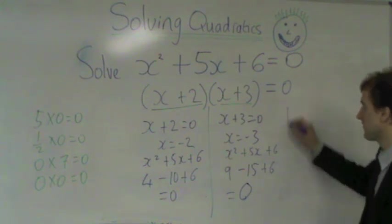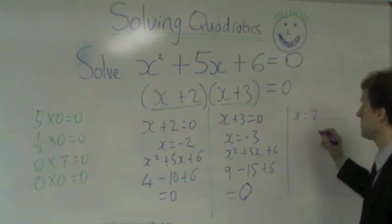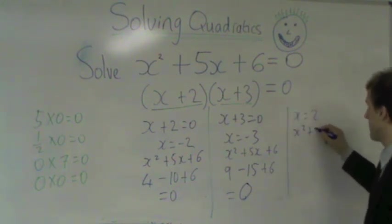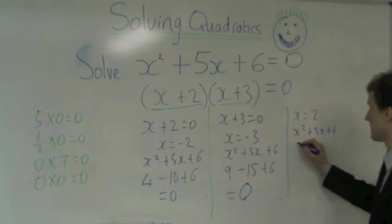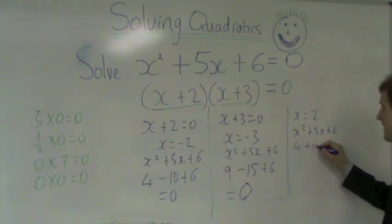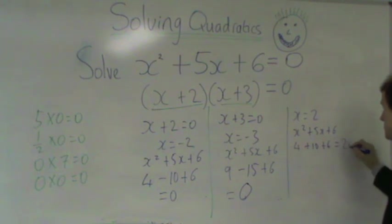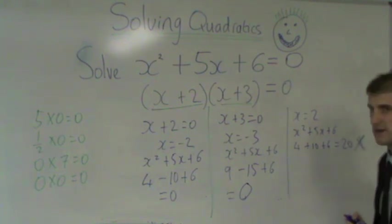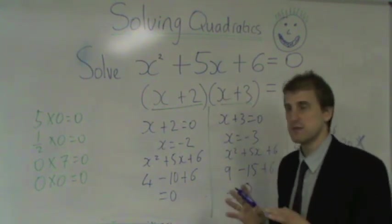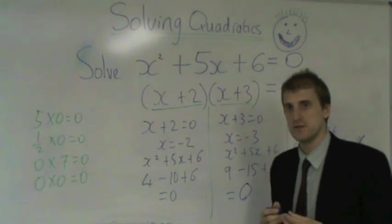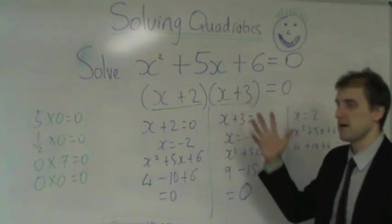There won't be any other solutions. We can randomly try another one: x is plus 2. x squared plus 5x plus 6, that's 4 plus 10 plus 6. Well, that makes 20. So that doesn't work. There aren't any other possibilities. You can only get a maximum of two solutions with a quadratic, and you get them by factorising.